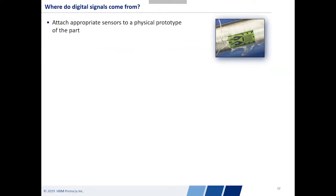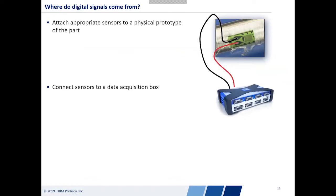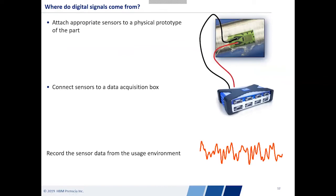Once we pick a sensor and put it on the part, we connect it to some sort of data acquisition box. The point is we're able to record data through this acquisition box, and what we ultimately end up with is a record of that sensor data from the usage environment. We instrument the part, put sensors on it, and record the data in its usage environment. That recorded signal will be very different depending on whether the part is mounted on the helicopter versus the boat.